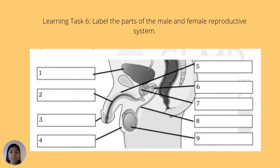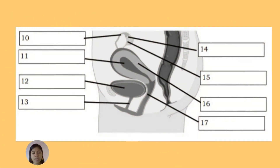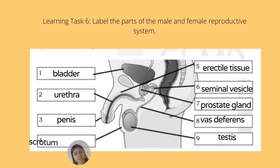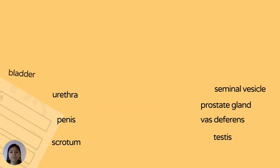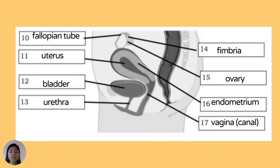Learning task six: label the parts of the male and female reproductive system. Correct answers — male system: 1 bladder, 2 urethra, 3 penis, 4 scrotum, 5 erectile tissue, 6 seminal vesicle, 7 prostate gland, 8 vas deferens, 9 testis. Female system: 10 fallopian tube, 11 uterus, 12 bladder, 13 urethra, 14 fimbria, 15 ovary, 16 endometrium, 17 vagina or canal.